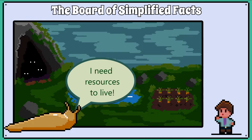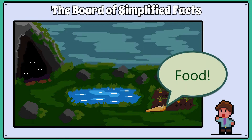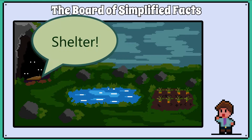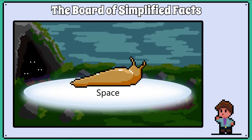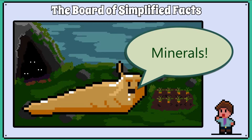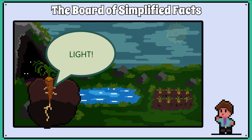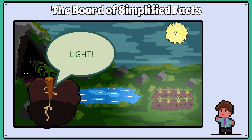In general, organisms require certain resources from their environment: food, water, shelter, space, minerals, and if you're a photosynthetic organism, then you need light.